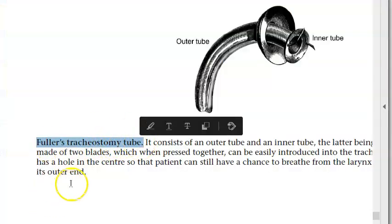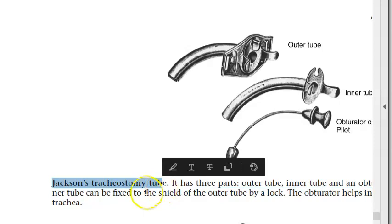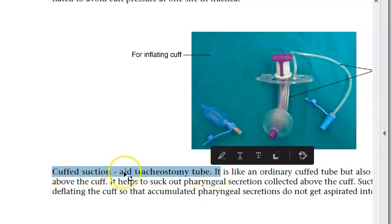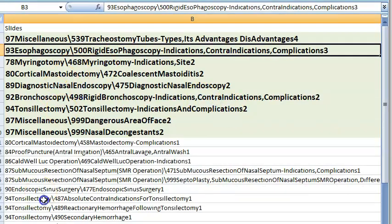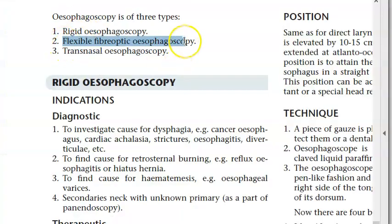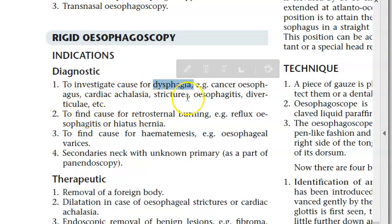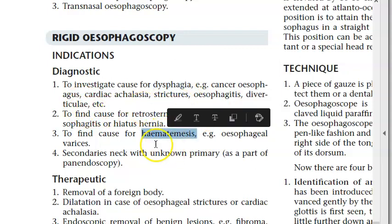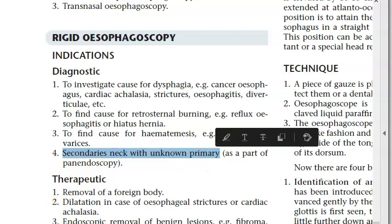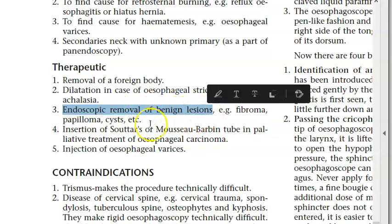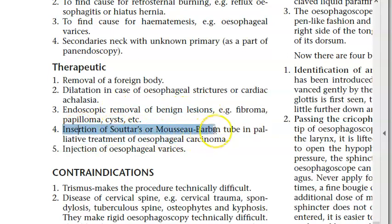Tracheostomy tubes: Fuller's tracheostomy tube, Jackson's tracheostomy tube, cuffed tracheostomy tube, cuffed suction aid tracheostomy tube. Rigid oesophagoscopy indications: dysphagia, retrosternal burning, haematemesis, secondary neck node with unknown primary. Therapeutic uses: remove foreign body, dilatation in oesophageal stricture, achalasia, endoscopic removal of benign lesions, injection of oesophageal varices.